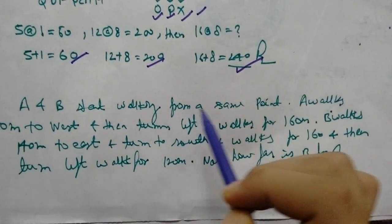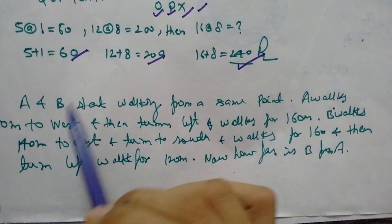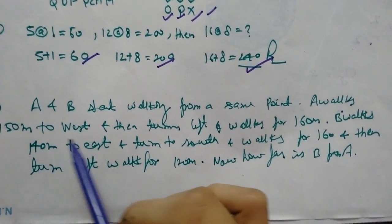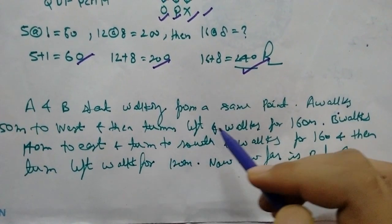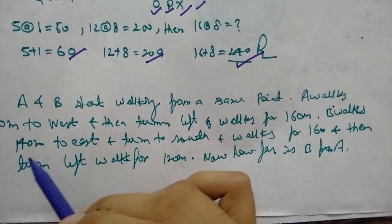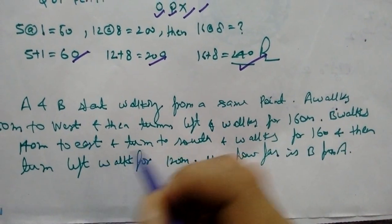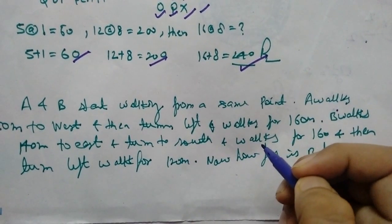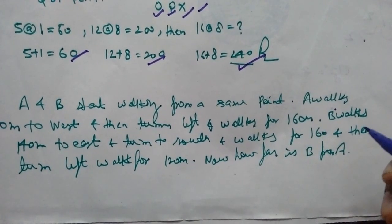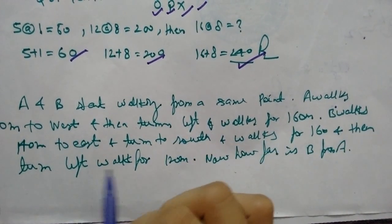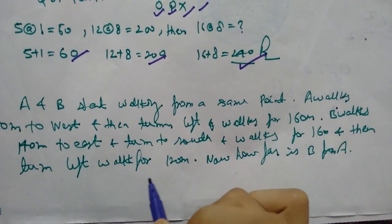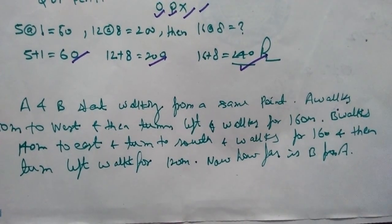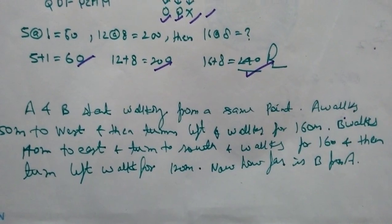A and B start walking from the same point. A walks 150 meter to west and then turns left and walks for 160 meter. B walks 140 meter to east, turn to south and walks for 160 meter and then turn left, walk for 120 meter.